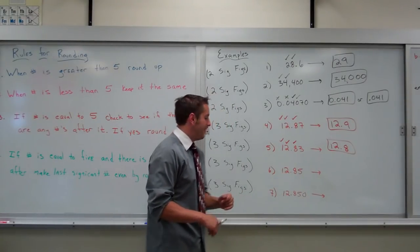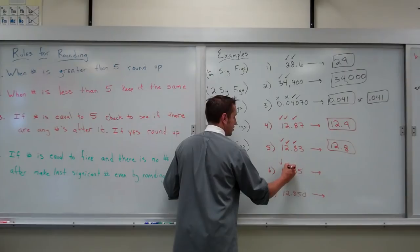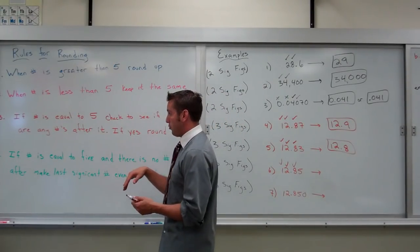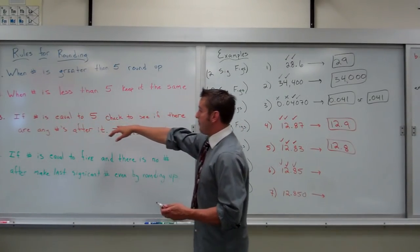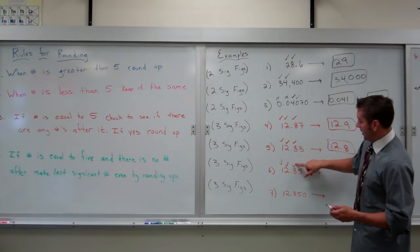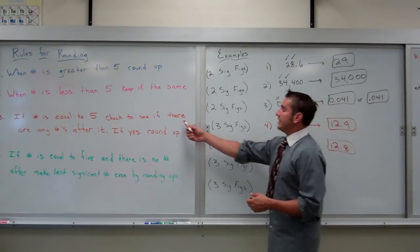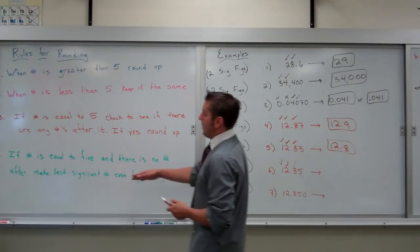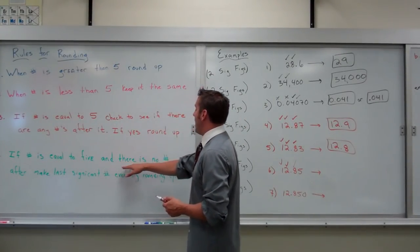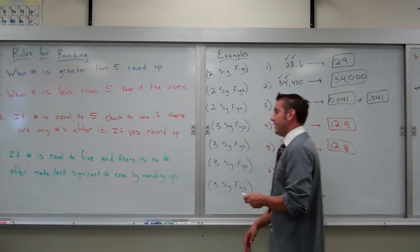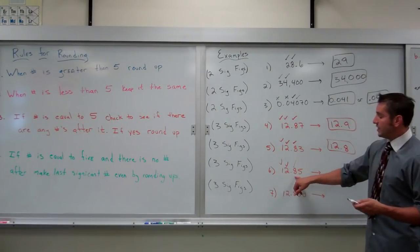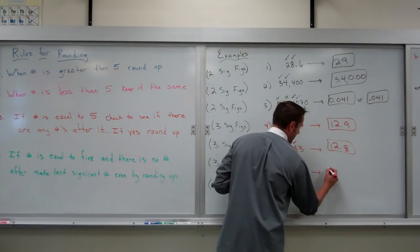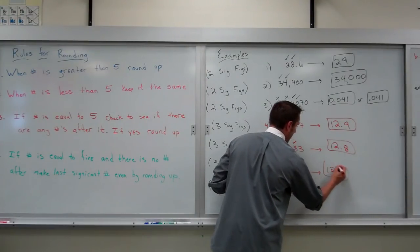Next case: 12.85 with three sig figs. The 1, 2, and 8 all count. Here is the scenario where we have a five. We check: is there a number after the five? There is not, so we use the rule that says make the last significant digit even. Eight is already an even number, so we don't need to change it. This would be 12.8.